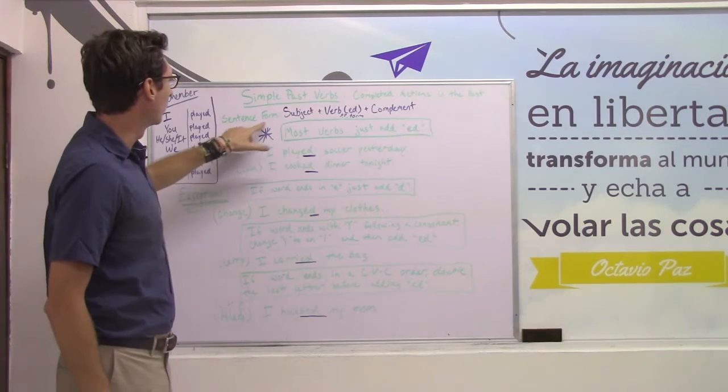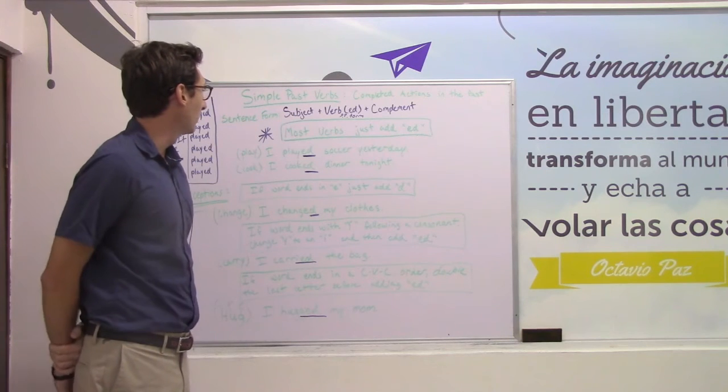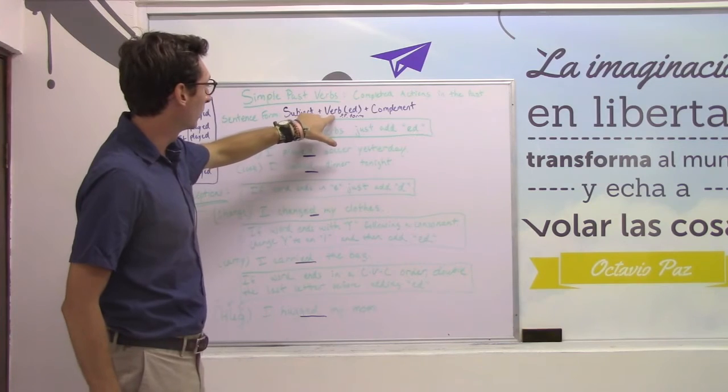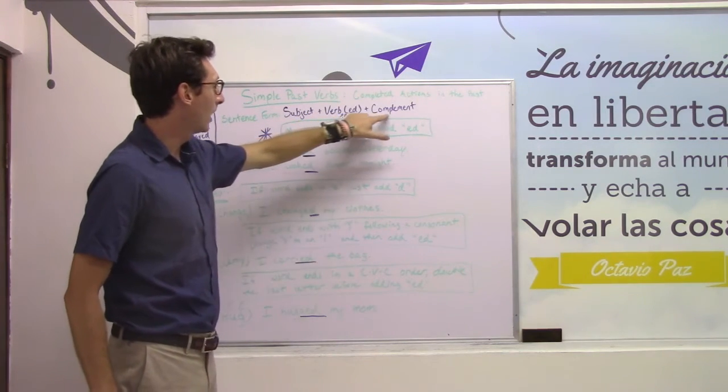Now our sentence form for making sentences about simple past verbs is going to be subject, then we're going to have a verb in the simple past form and the complement.